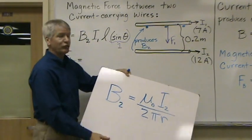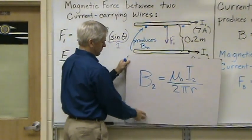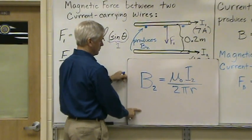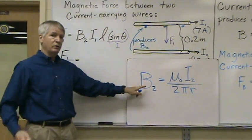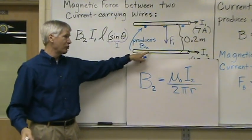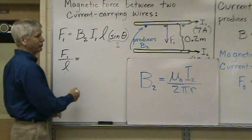Now we're going to substitute a value for B2 based on the information that we have. So from the first equation that we reviewed, we know that B2, the magnetic field produced by this current carrying wire is equal to this. So let's put those values in here.